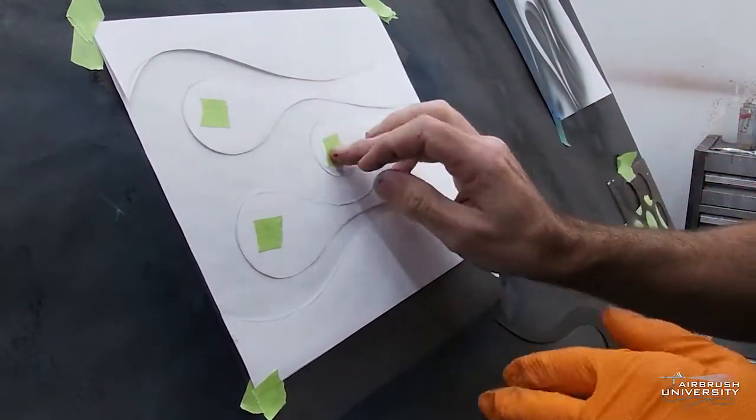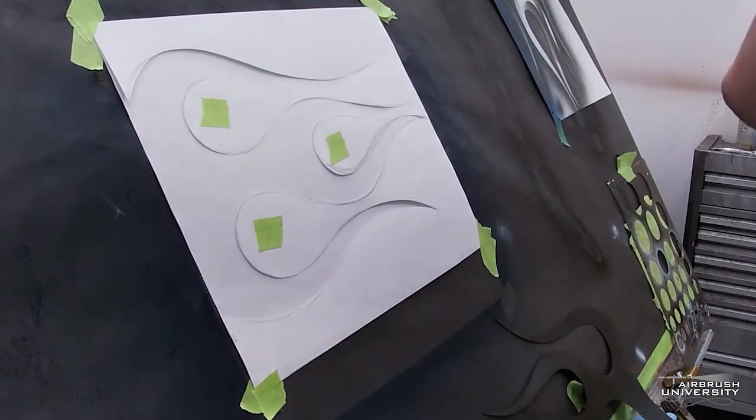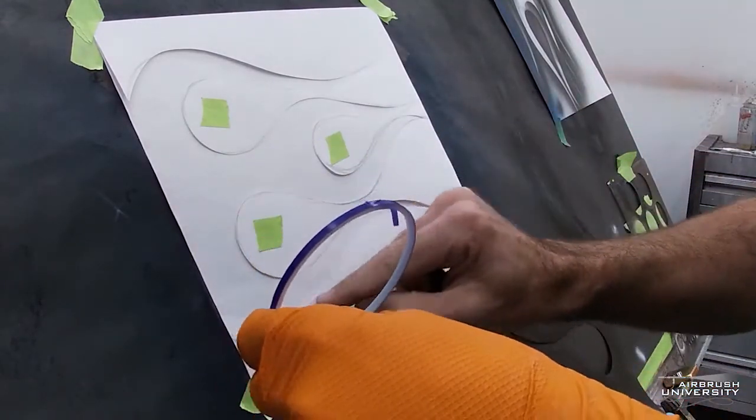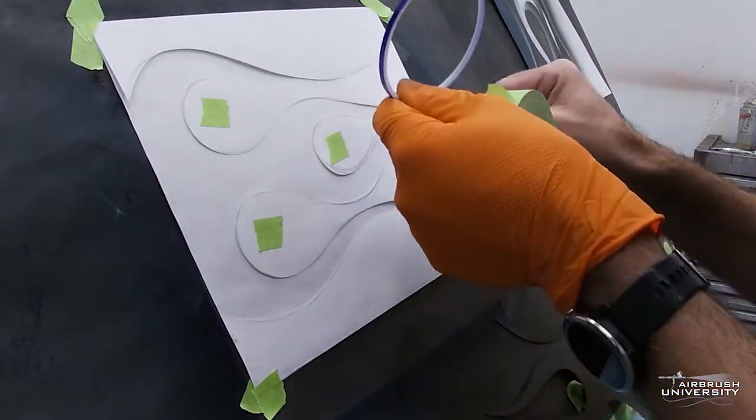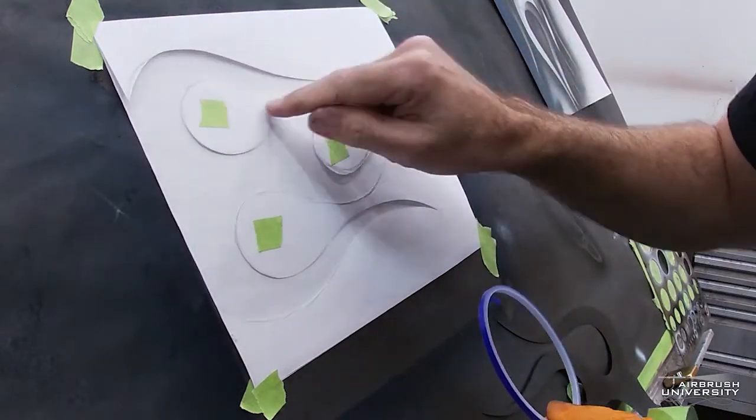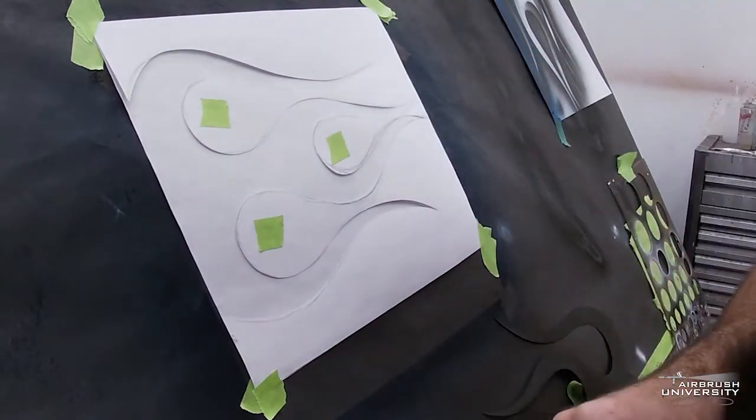This is how you can do ghost flames with paper stencils. Most of the time if it's a motorcycle tank you will lay this out with fine line tape. And you will outline everything with this tape and you'll fill in the outsides. All of this will be filled in with regular tape. And then you'll airbrush like I'm going to show you now.